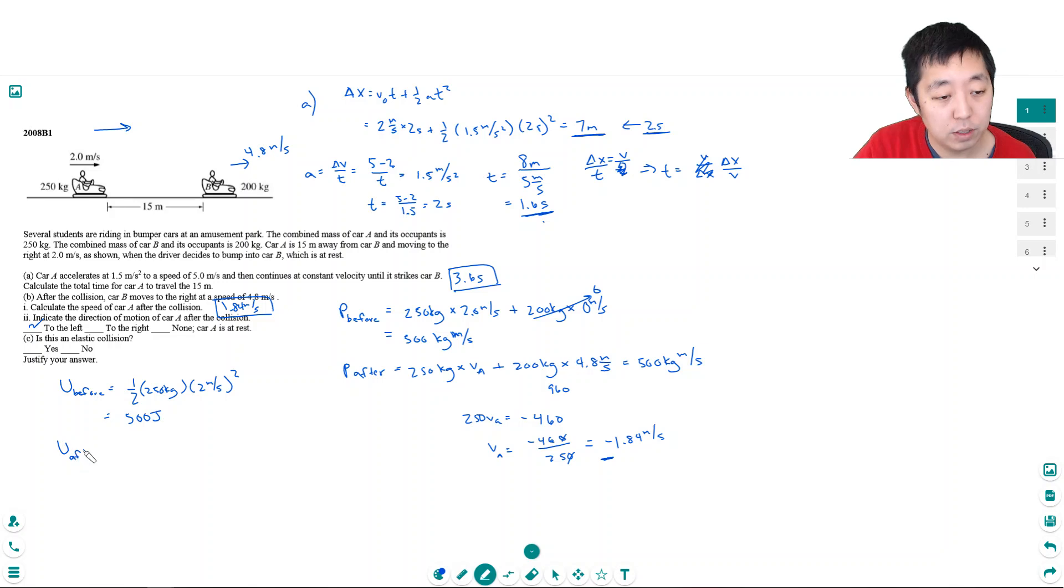The U after is 0.5 times 250 kilograms times 1.16 meters per second squared, the kinetic energy of this guy because he's moving to the right, and it's the kinetic energy of this guy: 0.5 times 200 kilograms times 4.8 meters per second squared. Oh, it's not 2, dude, he's moving at 5 meters per second. I don't know why I thought 2. 2 is his initial. He actually ends up at 5.